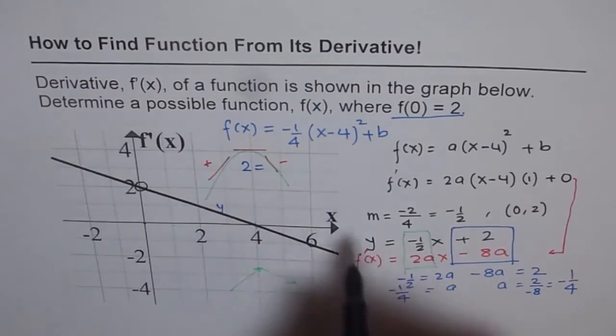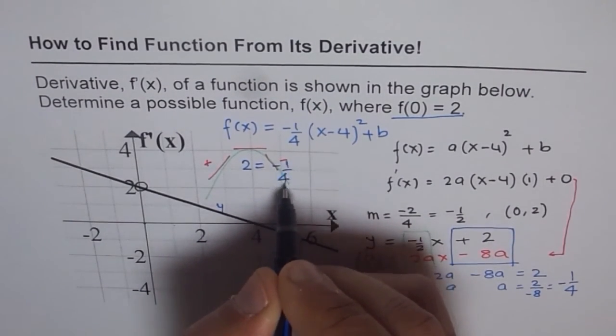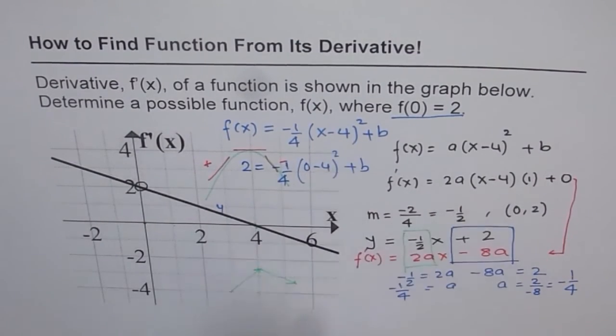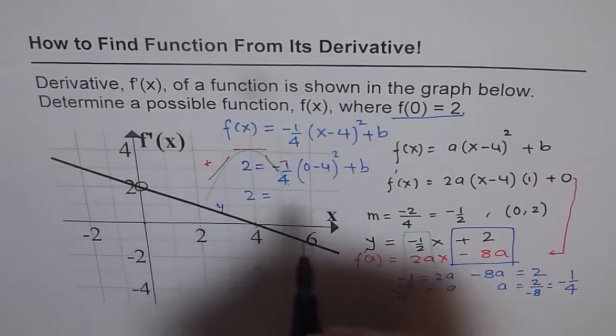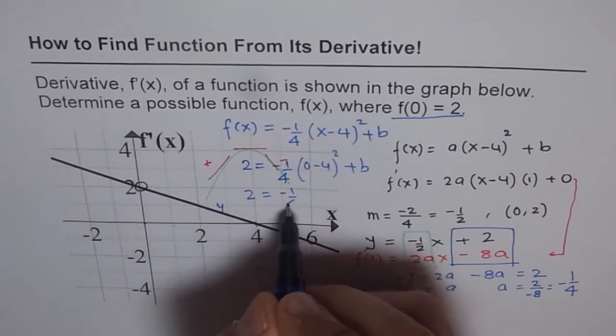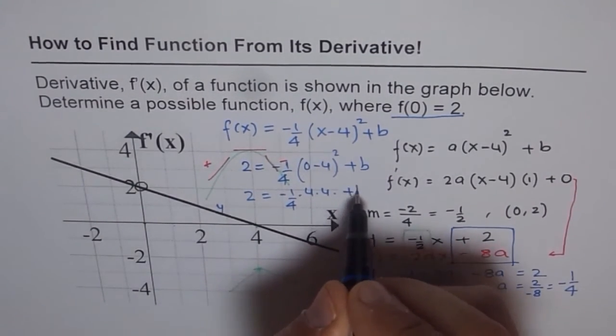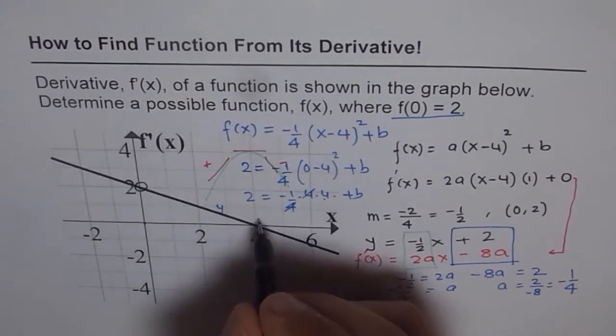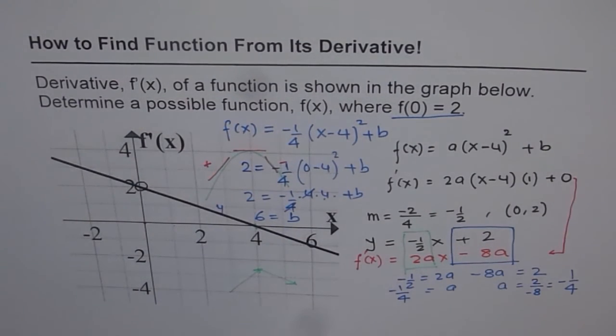So if we do that, f(0) means 2 y value. So y value is 2 here. So I am running out of space. I am using this area. Minus 1 out of 4, and that gives me (0 - 4)² plus b. So you could calculate b from here. We get 2 equals to minus 1 over 4 and 4 squared is 16. 4 times 4 plus b. So this gets cancelled out. So you get minus 4 here which you take on the left side and you get 6 equals to b. So b is 6 for you.